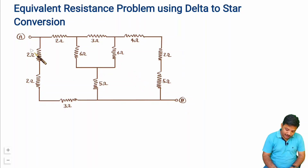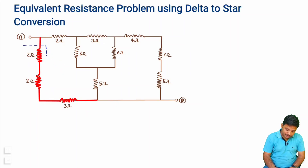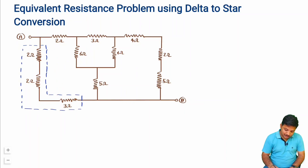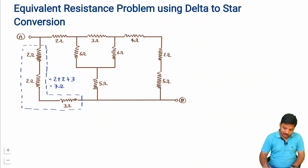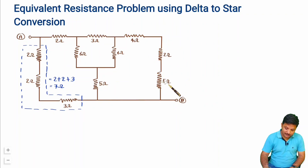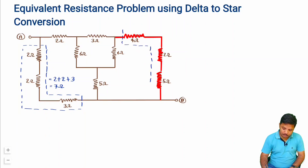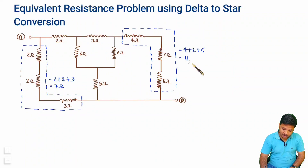Here we have this resistance, this resistance, and this resistance in series. The equivalent of these resistors is just the algebraic sum, so that is 2 plus 2 plus 3, which is 7 ohm. Here also we have 4 ohm, 2 ohm, and 5 ohm in series, so equivalent of these is also the algebraic sum: 4 plus 2 plus 5, which is 11 ohm.